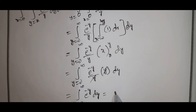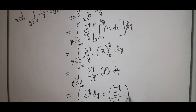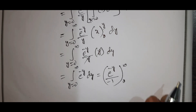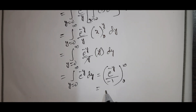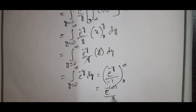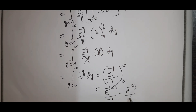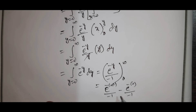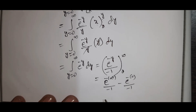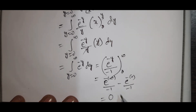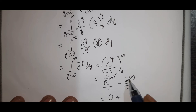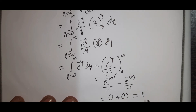That equals: integral of e power minus y, which is e power minus y by minus 1, evaluated from 0 to infinity. Applying the upper limit gives e power minus infinity by minus 1, minus e power minus 0 by minus 1. e power minus infinity equals 0, so minus into minus gives plus e power 0, which equals 1. That equals value 1.